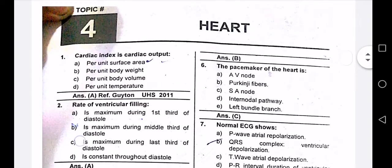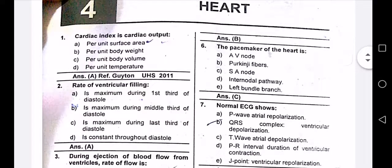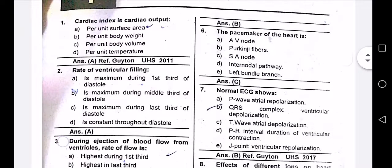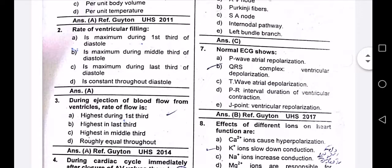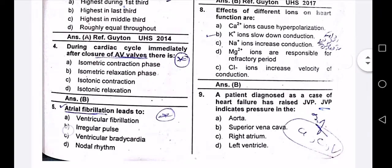In the heart, it is basically the cardiac index. It comes first to the output of the cardiac index. Rate of ventricular filling during injection of blood flow from the ventricle. Rate of flow during the cardiac cycle — immediately after closure of the AV valve, there is an isometric relaxation phase.